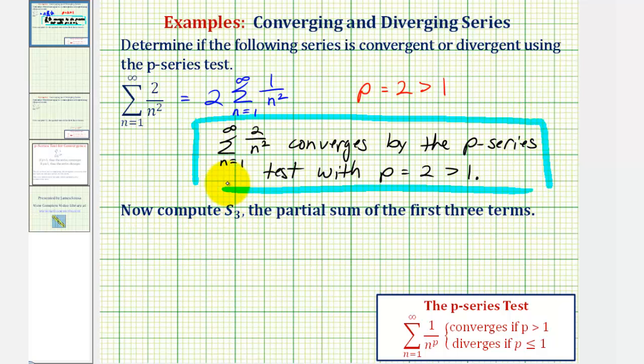Now we're asked to find the partial sum s sub three. So s sub three would be equal to the summation from n equals one to three of two divided by n squared.